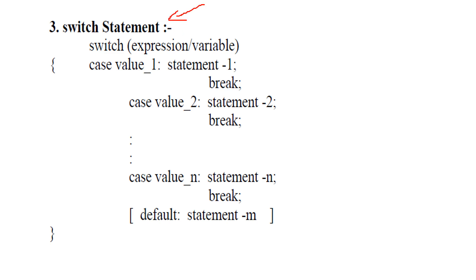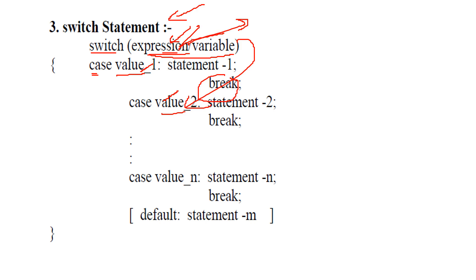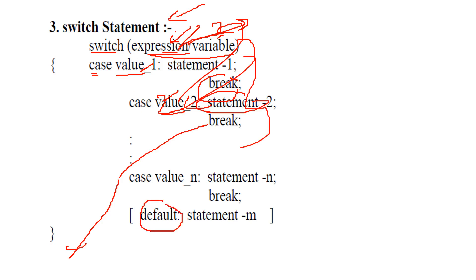The switch statement is a more elegant and faster way to implement if-else or else-if ladders. You write 'switch(expression or variable)' — the expression must give only an integer or character value; switch does not work for double or float. Inside, you have different cases. Whichever case matches the value is executed, then a break statement exits the switch. If no case matches, an optional default block is executed.